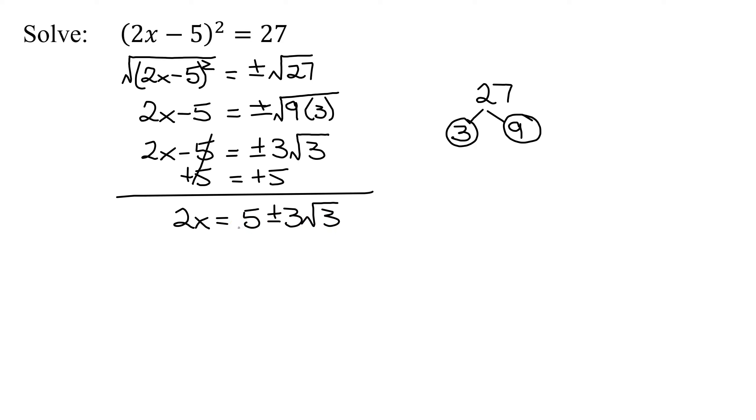Now I get x by itself by dividing both sides by 2. So x = (5 ± 3√3)/2.